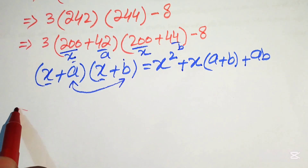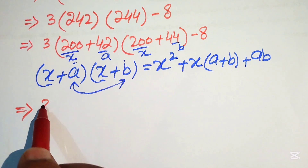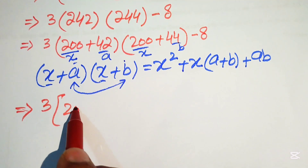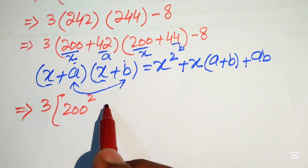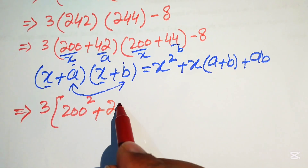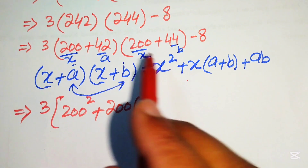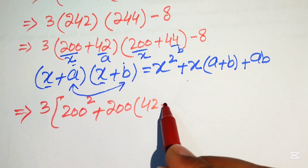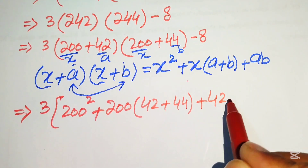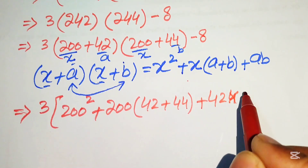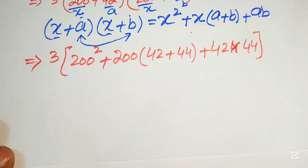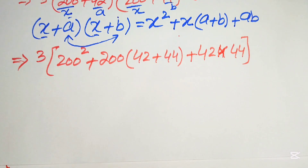Applying the formula, we get: 200 squared, plus 200 times 42 plus 44, plus 42 times 44. This gives us three terms to simplify, all multiplied by the outer factor of 3.